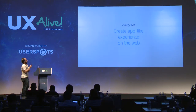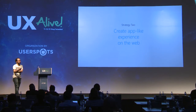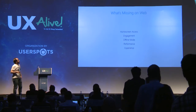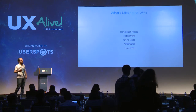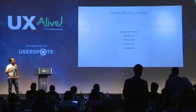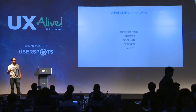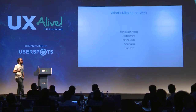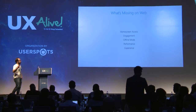Strategy two could be: create an app-like experience on the web, so that you can provide a better, richer experience and get better results. We should look at what's missing on websites right now, specifically mobile websites. We don't have home screen access on our mobile devices, and we are lacking engagement options like push notifications — even an icon on the home screen is a way to engage users. We are lacking offline mode capabilities, we are having performance problems, and we are not getting the best experience on mobile sites.